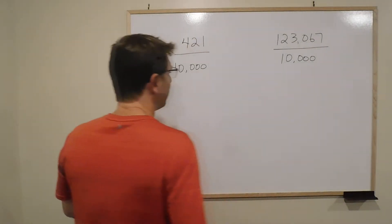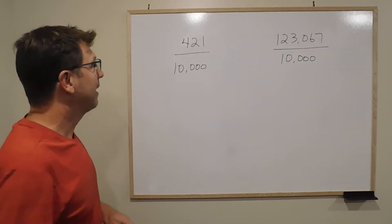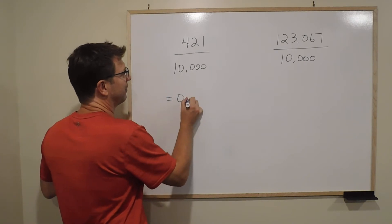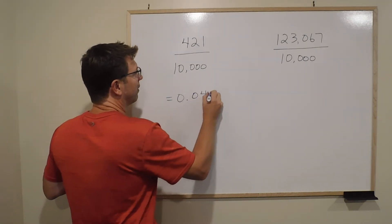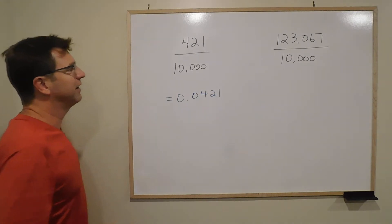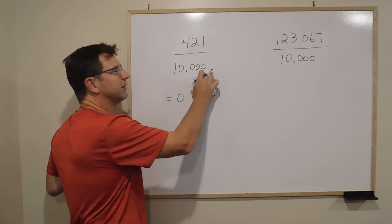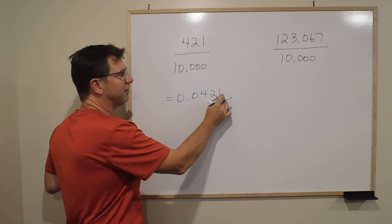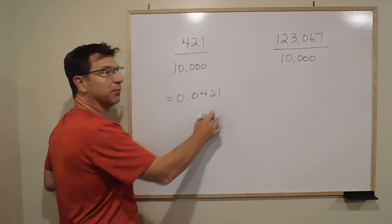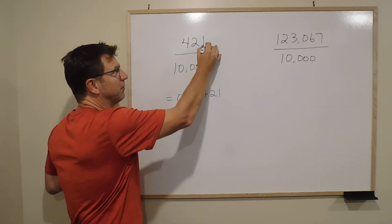What I'd like you to notice is when you do that and you get this answer on your calculator of 0.0421, why you get that answer is because 10,000 has four zeros in the denominator which ends up giving you four decimal places. So the decimal would be there.